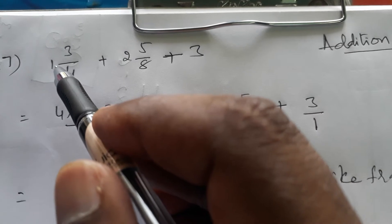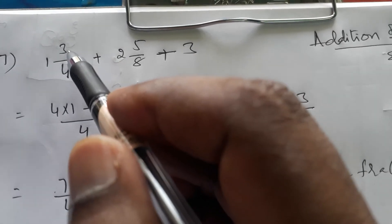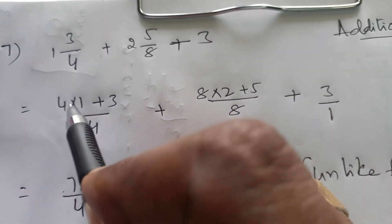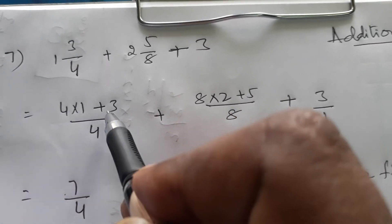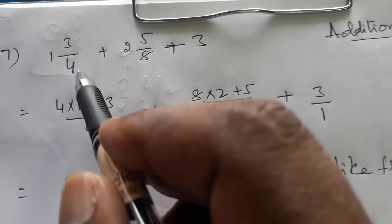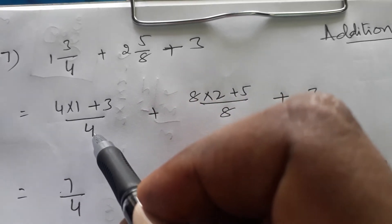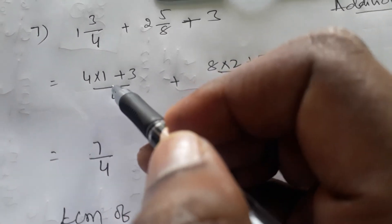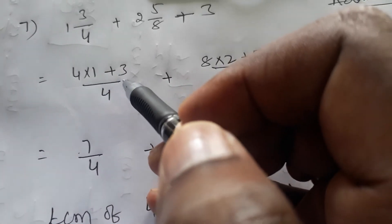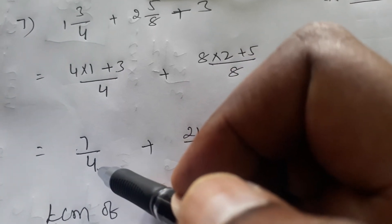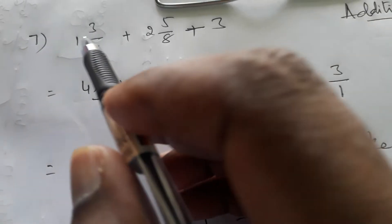So 4 × 1 = 4, plus 3 = 7. Write the total in the numerator, and the denominator repeats — so you get 7/4. That is how 1 3/4 converts to 7/4. Now once again: multiply the denominator and the whole number, add the numerator, write the total in the numerator, and the denominator repeats.